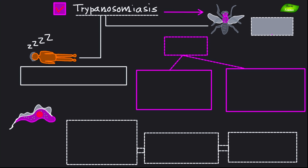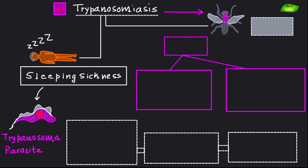Now let's move on to trypanosomiasis, also known as sleeping sickness — so you can understand the disease is associated with our sleep cycle. It is caused by the Trypanosoma parasite and is transmitted by the tsetse fly, which is responsible for the transmission of this parasite.